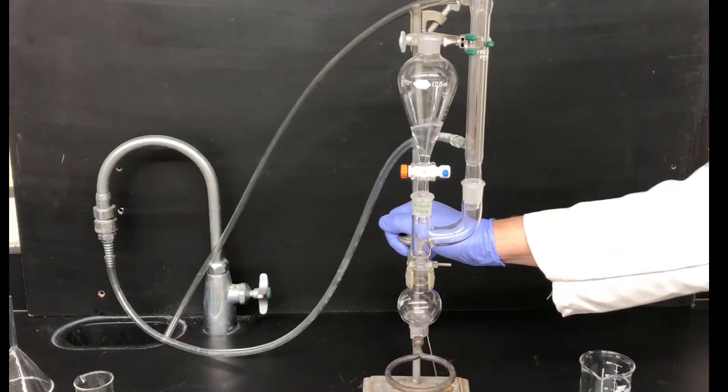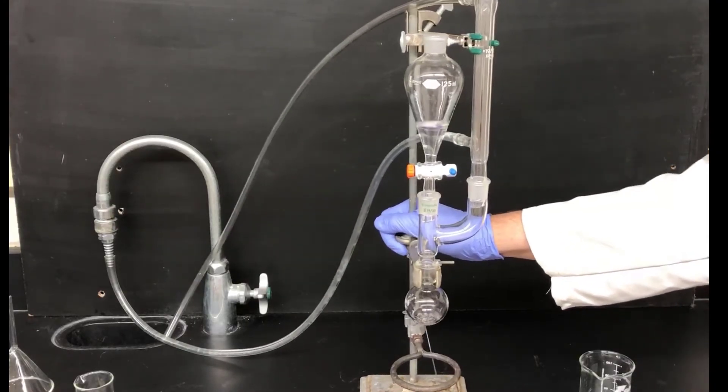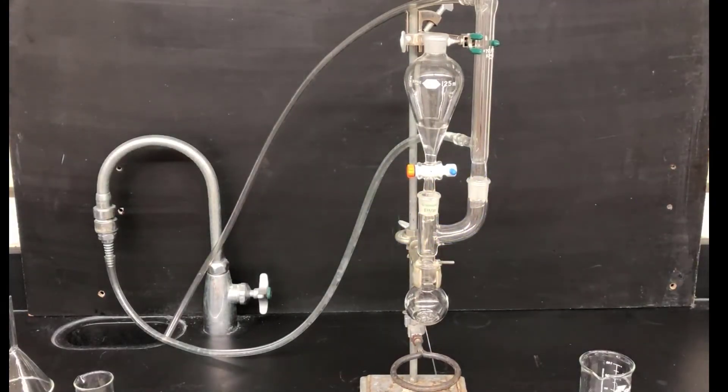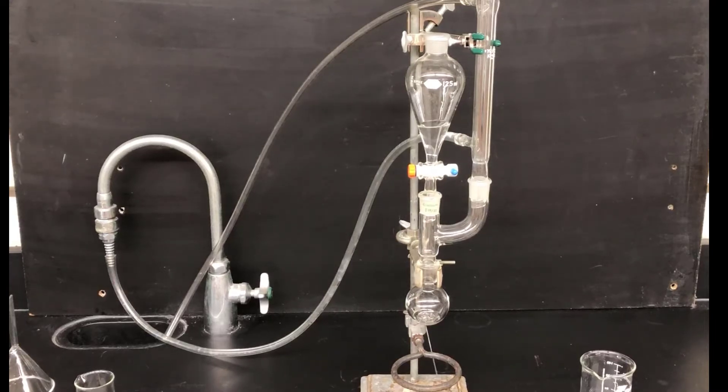Now we watch and wait for the Grignard reagent to start forming. You'll be able to tell something is happening because you'll see kind of a white or grey cloudiness develop in the solution, which will eventually give way to a yellow and brown color. You may also see bubbles forming on the magnesium, which is the exothermic reaction occurring and boiling the ether solvent. That boiling will become vigorous once the reaction has really started. Watch the reaction at room temperature for about 5 minutes or so and look for any evidence that it's started. If you don't see any cloudiness in that time, we'll have to get a little bit more aggressive in trying to get the reaction started.